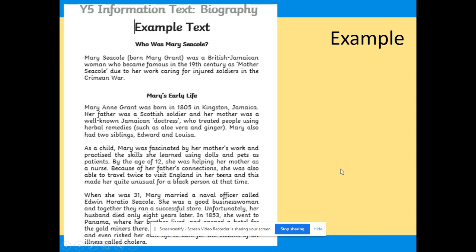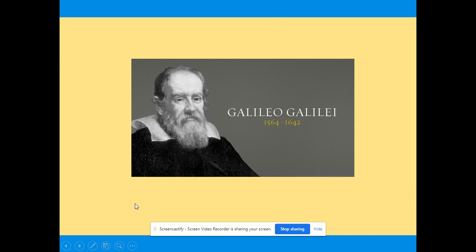I want to show you an example of the start of a biography. This is a bit of an introduction about Mary Seacole, and then it goes on to Mary's early life. I'm hoping that the subheading 'early life' has triggered the thought and reminded you about Vincent van Gogh. In this section it says: 'Mary Ann Seacole was born in 1805 in Kingston, Jamaica. Her father was a Scottish soldier and her mother was a well-known Jamaican doctoress who treated people using herbal remedies. Mary also had two siblings, Edward and Louisa.' So it talks about Mary as a child — that's her early life.